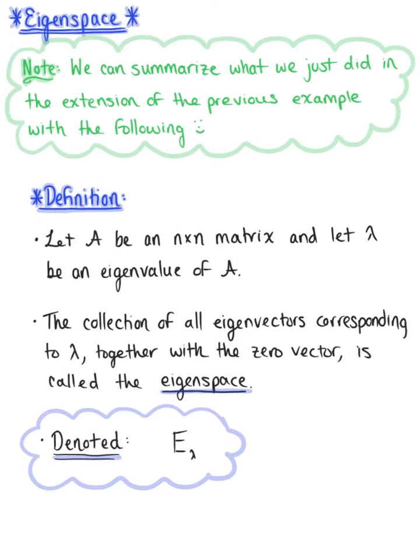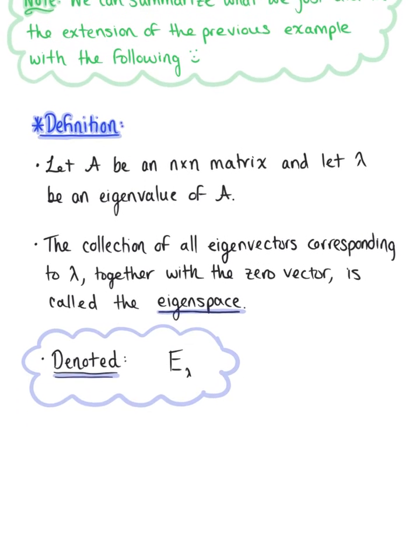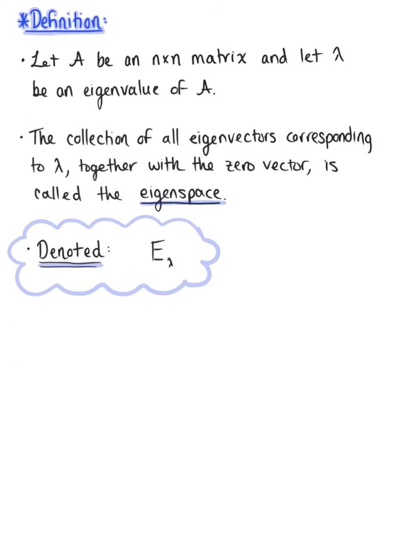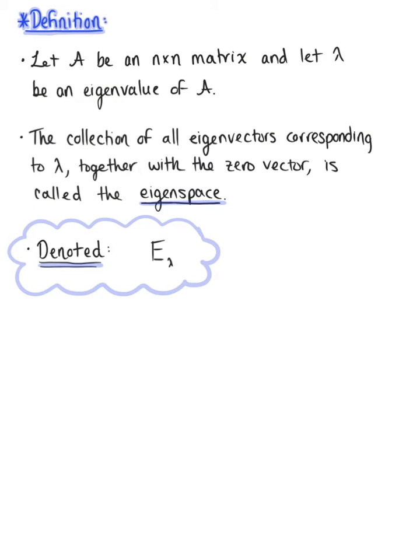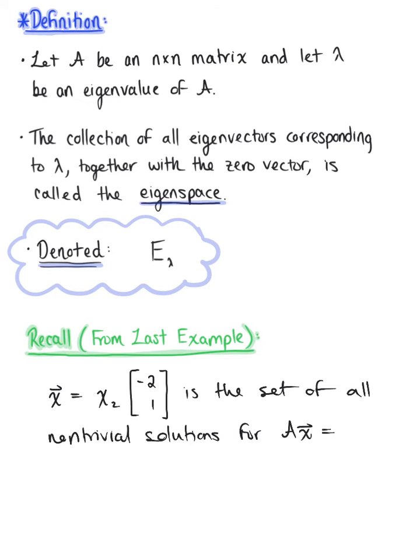So now that we have the definition of this eigenspace, let's take a minute and think back to the extension of our previous example. So in the last example, we found that vector x being equal to x sub 2 multiplied by that vector negative 2, 1, is the set of all non-trivial solutions for matrix A times vector x is equal to 2 times vector x.